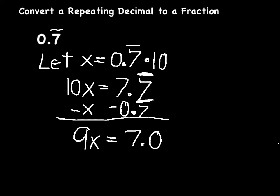Now I have 9x equals 7. I want to solve for x, because remember, back at the top, x is equivalent to 0.7 repeating. So I'm going to solve for that by dividing both sides of the equation by 9. On the left-hand side, 9 divided by 9 cancels out, leaves us with x. On the right-hand side, we have 7 over 9, or 7 ninths.